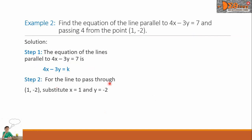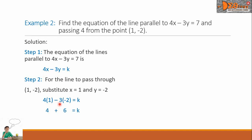For step 2, for the line to pass through the point (1, −2), we substitute x equals 1 and y equals negative 2. So we have 4 times 1 minus 3 times negative 2 equals k. Simplifying: 4 times 1 is 4, and negative 3 times negative 2 is positive 6. So 4 plus 6 equals 10, meaning k equals 10.